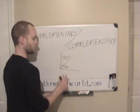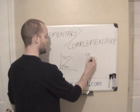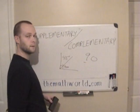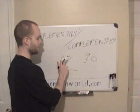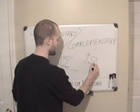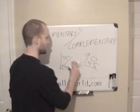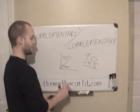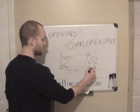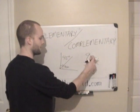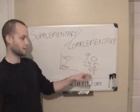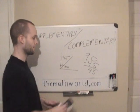All we have to do is take 90 and subtract what we already have, 45 degrees. So the complementary angle for 45 degrees is 45, because 90 minus 45 is 45.